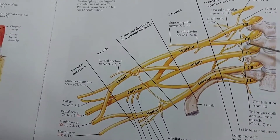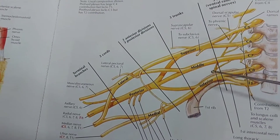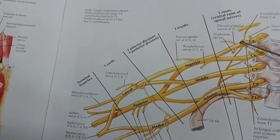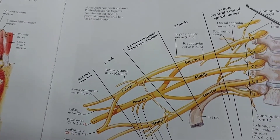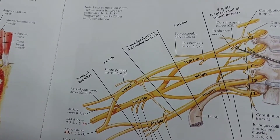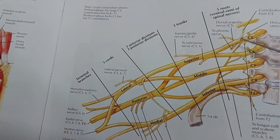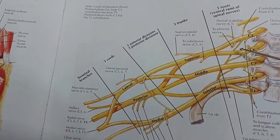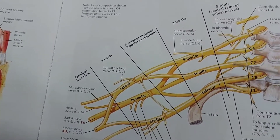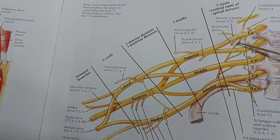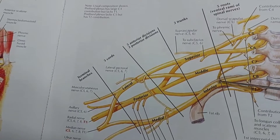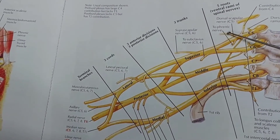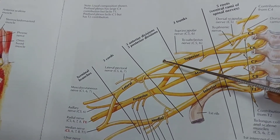The root of the brachial plexus has two branches. One branch is the long thoracic nerve and another branch is the dorsal scapular nerve. An interesting thing is that the divisions have no branches.